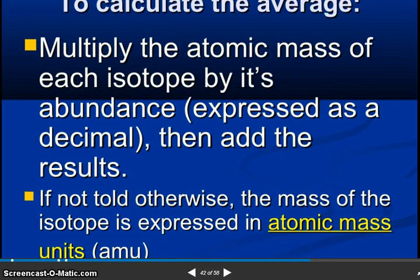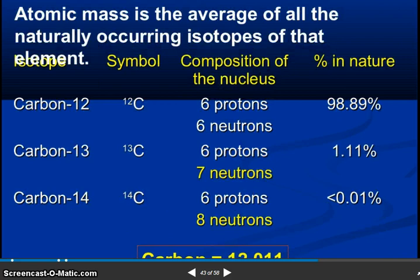To calculate the average, multiply the atomic mass of each isotope by its abundance expressed as a decimal, then add the results. If not told otherwise, the mass of the isotope is expressed in atomic mass units. So atomic mass. Atomic mass is the average of all naturally occurring isotopes of the element.